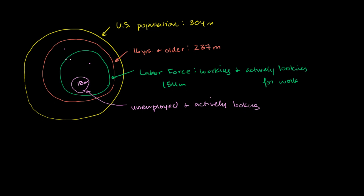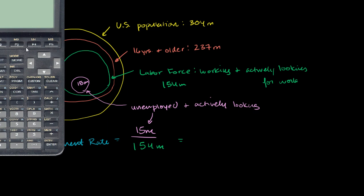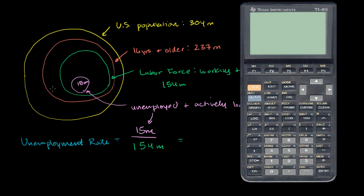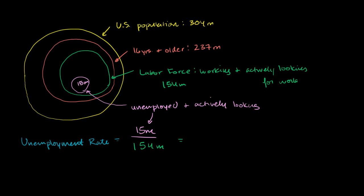This is going to be interesting when we think about trends in the unemployment rate going up or down. The unemployment rate is literally just the number of unemployed over the entire labor force. So in this situation, it would be 15 million — the number unemployed and actively looking — over the entire labor force of 154 million. Getting out my handy TI-85: 15 divided by 154 million gives us an unemployment rate of about 0.097, or 9.7%.